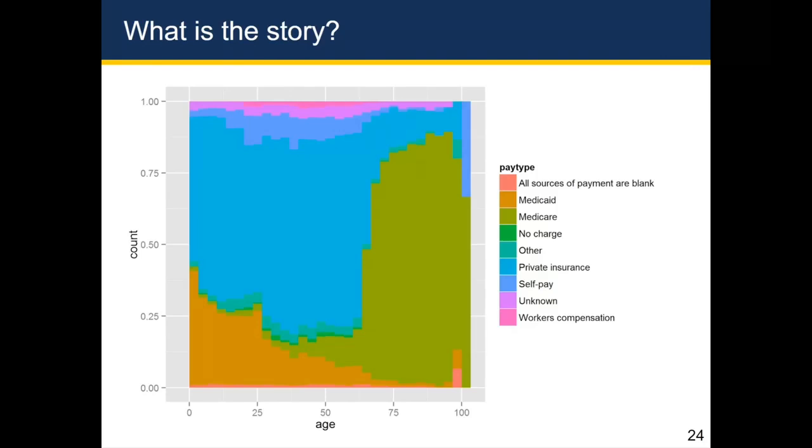In this other plot though, the story becomes a lot more clear. The story that this plot is telling is that when people are early in life they're fairly likely to have Medicaid and/or private insurance, and as people get older their chances of having Medicaid goes way down to the point where older in life it looks like almost no one has Medicaid.